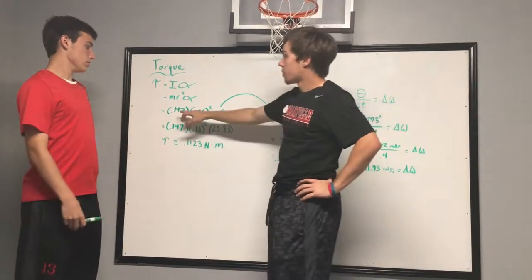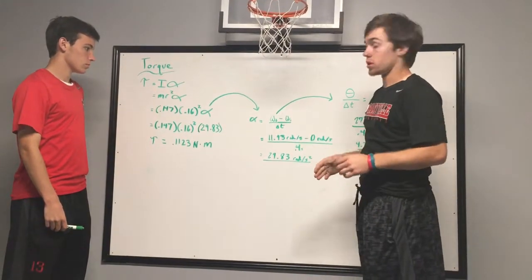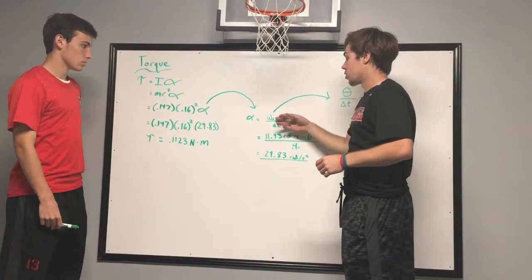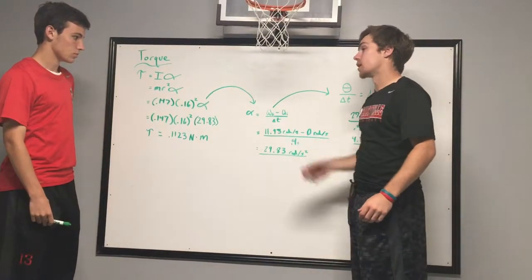So we plugged in our numbers for mass and radius, but we didn't know what alpha was. So we had to do another formula to find alpha, and that formula is alpha equals omega final minus omega initial over time, but we did not know omega.